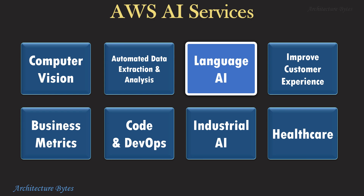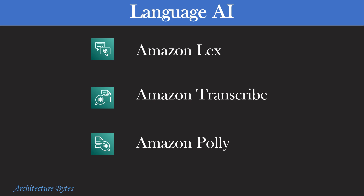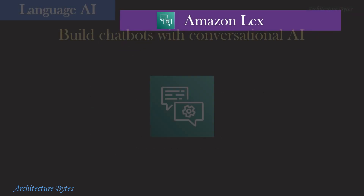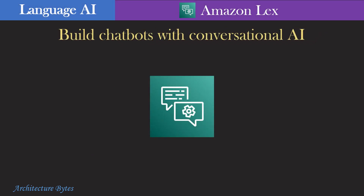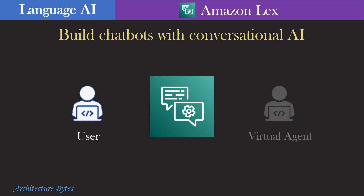Let us look at Language AI services now. Here we have Amazon Lex, Transcribe, and Polly. Amazon Lex can be used to build conversational interfaces in voice or text, for example as a chatbot. You can create virtual agents for customer support, integrate it with Lambda functions to extract data from data sources and use it in chats, and so on. No hardware to provision, no upfront costs. You pay only for what you use.